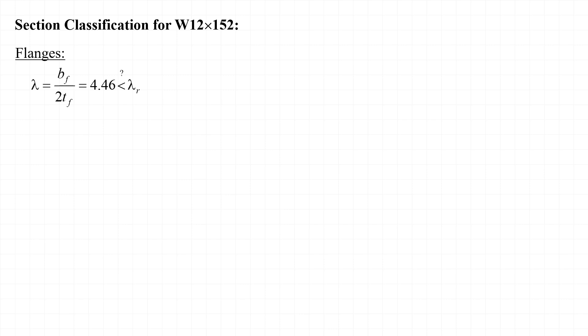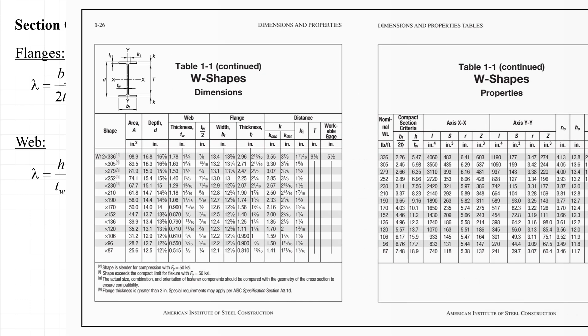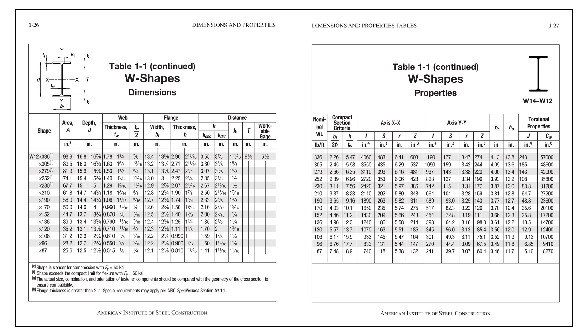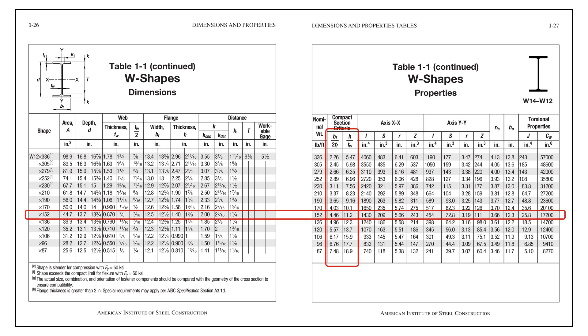As a first step in calculating the available strength of the column, I'll check the flanges and web of the W12x152 to see if they're classified as slender or non-slender for compression. For the flanges, b_f / 2t_f = 4.46, and for the web, h / t_w = 11.2. We can find these values tabulated in Part 1 of the AISC manual, where b_f / 2t_f is tabulated as 4.46 and h / t_w is tabulated as 11.2.